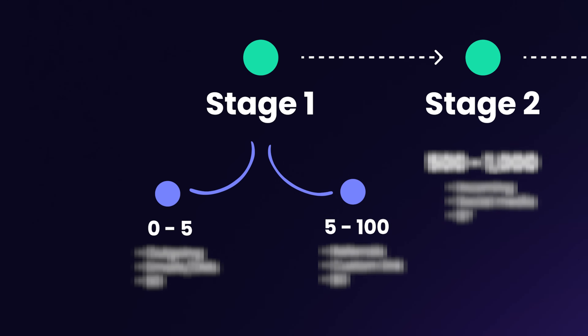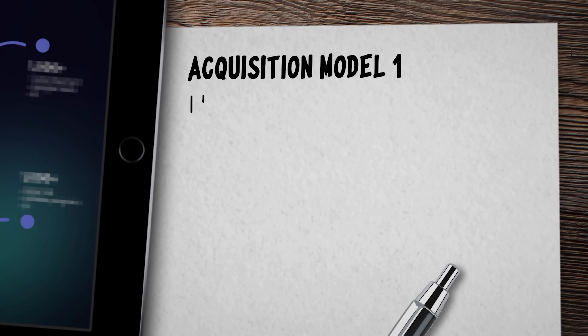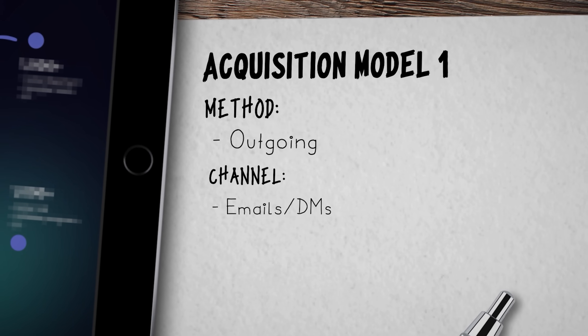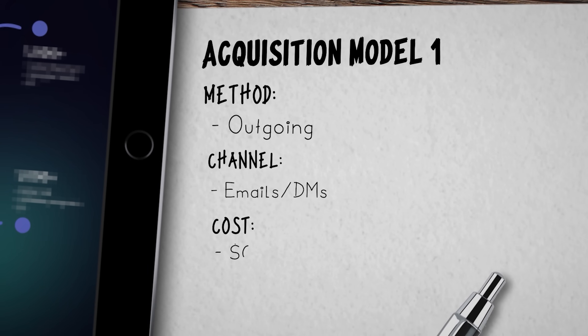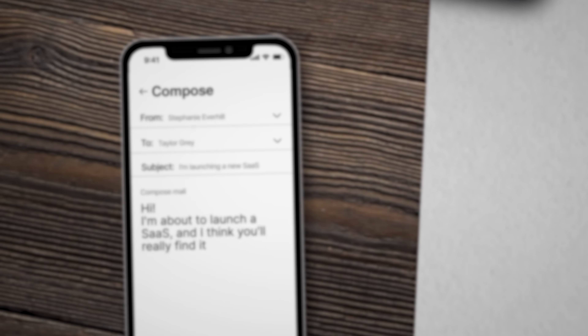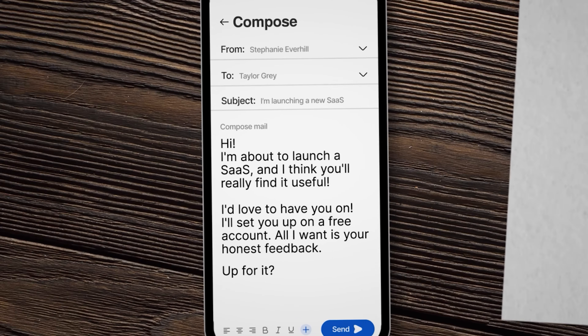We need to design two acquisition models for the first stage of our roadmap. For the first five users, we'll use the outgoing method — reaching out via email or DMs, at zero cost, manually, one by one. The idea is simple: use your close network — family, friends, colleagues, partners, people you know personally — who you believe would benefit from your product. Tell them you're launching a product, that you have an MVP ready, and that you're looking for the first few users. Offer them a completely free account for life and ask only for their feedback in return.